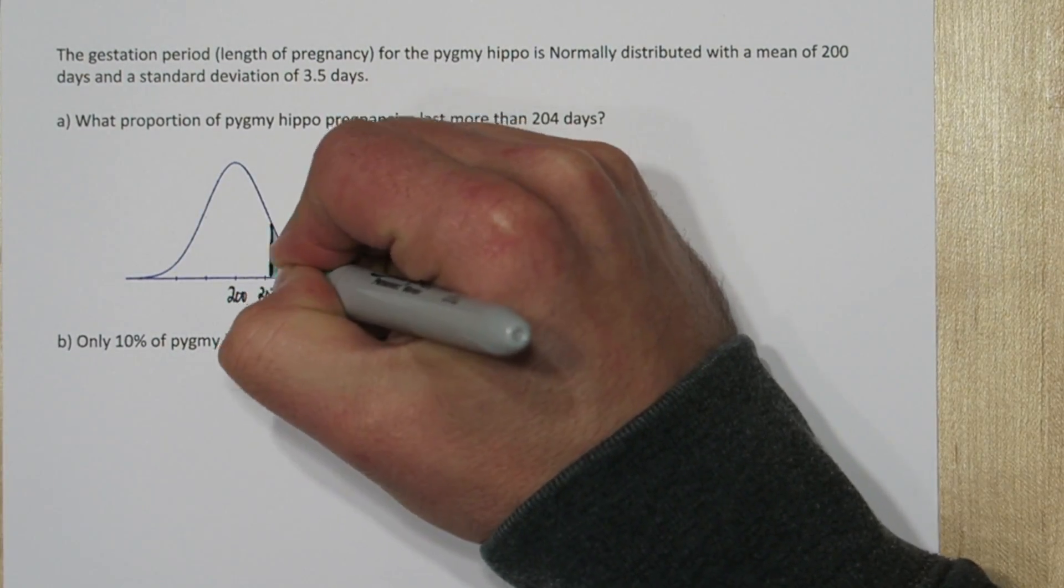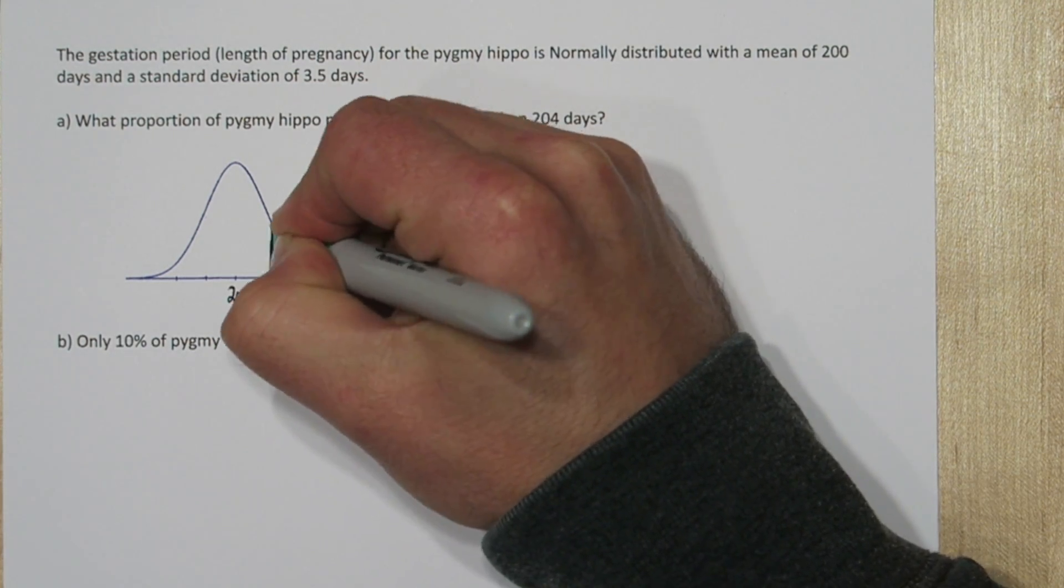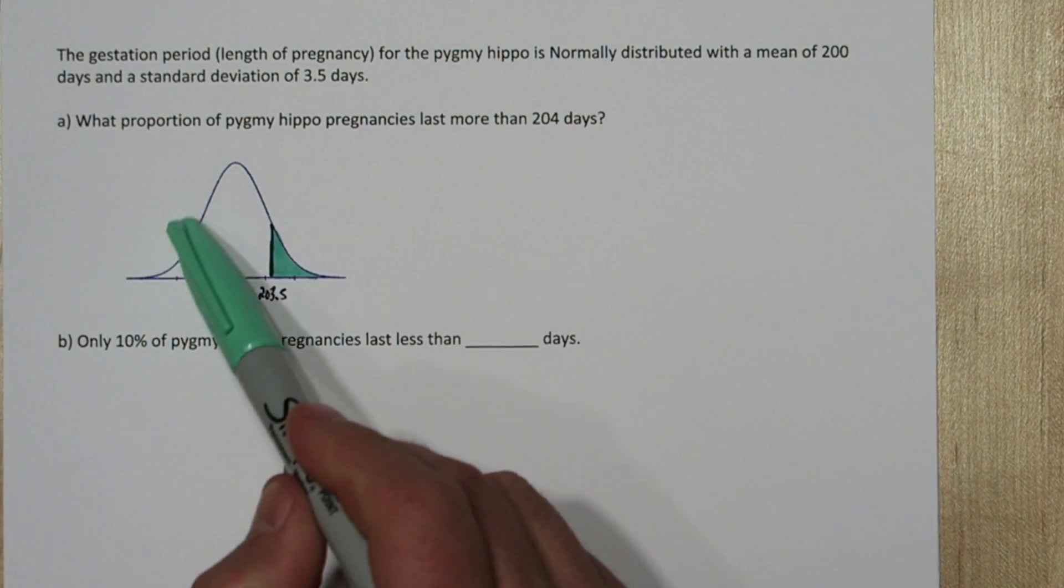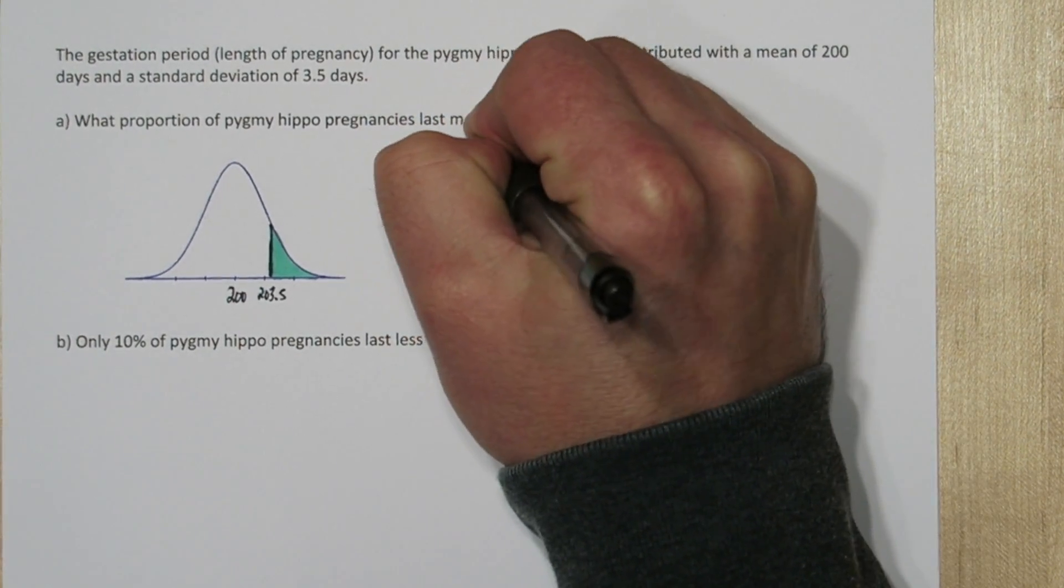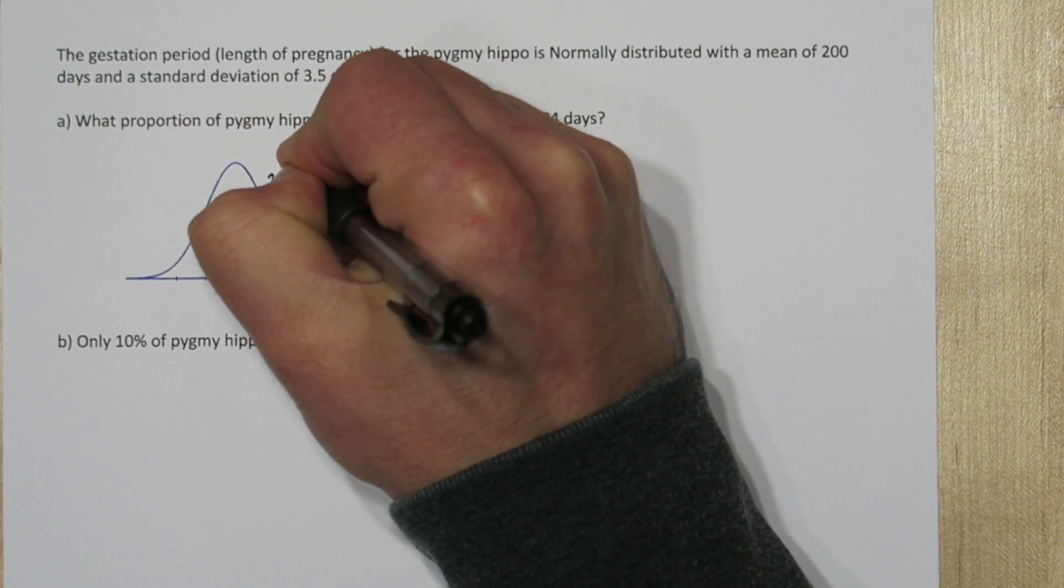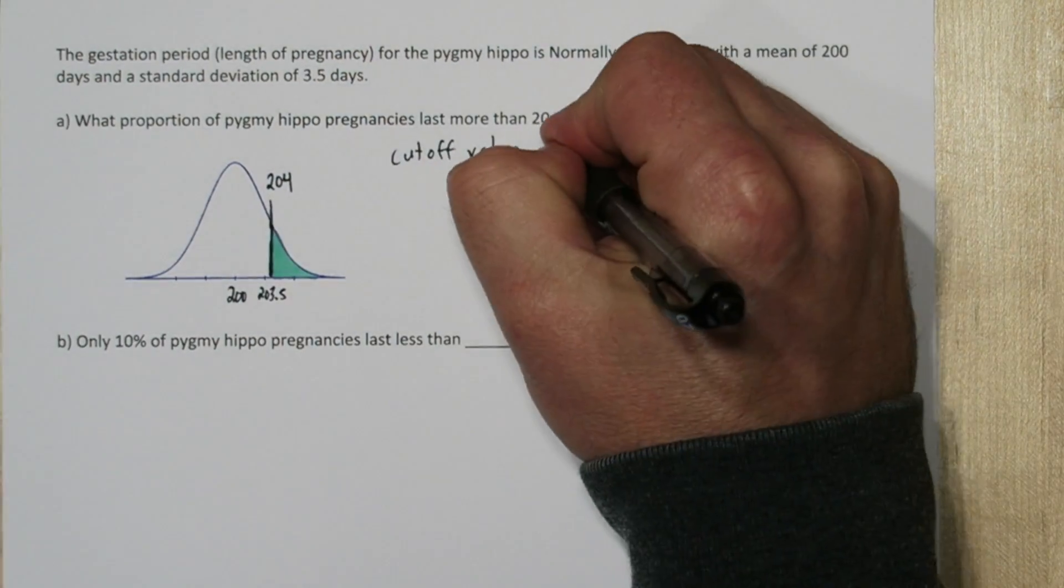So the proportion we're interested in is this area. Now the area under the entire density curve is 1, so just by eyeballing this, we know it's probably somewhere in the teens or maybe around 10%. Now in this situation we have the cutoff value, the 204, and we're trying to find the area.